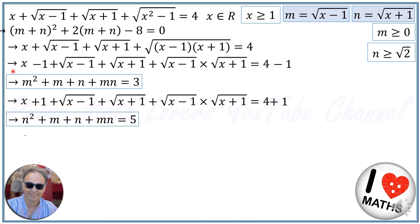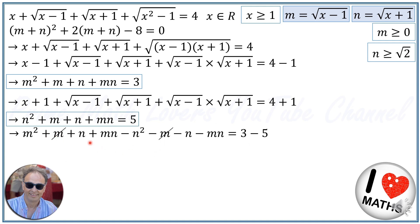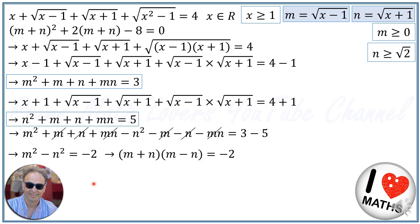In the next step, I subtract the first equation from the second. This gives M squared plus M plus N plus MN minus N squared minus M minus N minus MN equals 3 minus 5. The M terms cancel, the N terms cancel, and the MN terms cancel, leaving M squared minus N squared equals negative 2. Using the difference of squares, we write M plus N times M minus N equals negative 2.